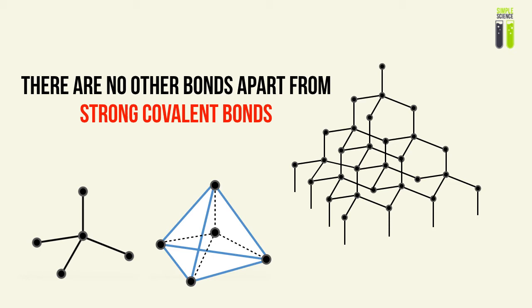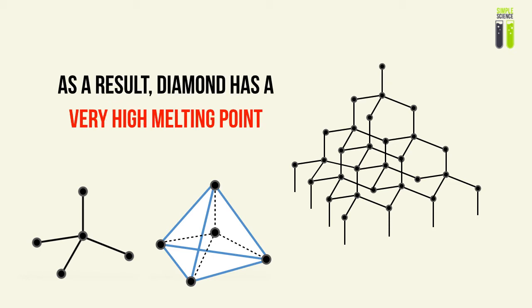As a result, there are no other bonds available apart from strong covalent bonds within the diamond structure. These bonds are very strong and there are no other forces between them. This gives diamond its very high melting point, because imagine trying to overcome millions and millions of very strong covalent bonds packed in a very small structure, separated by nothing except carbon atom after carbon atom across millions of carbon atoms.